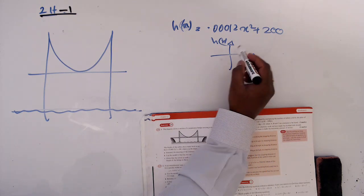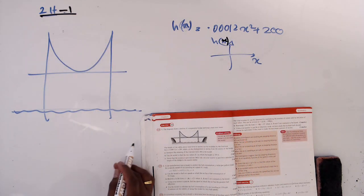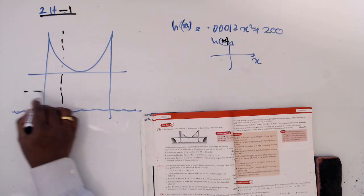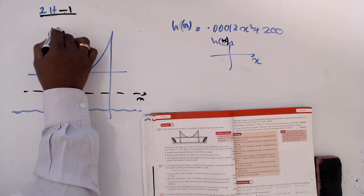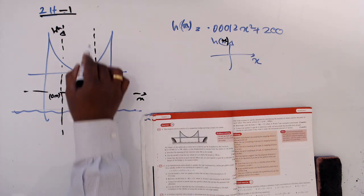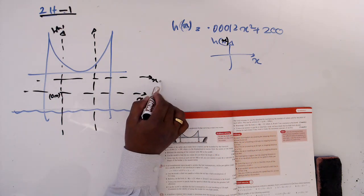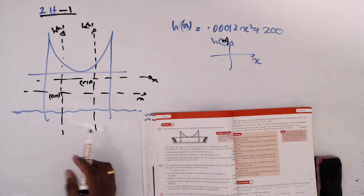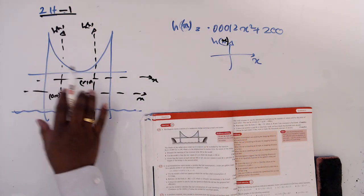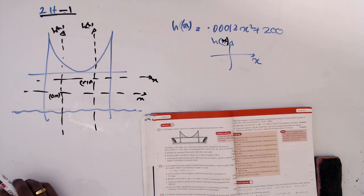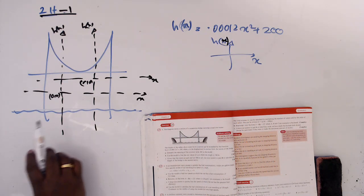Now we want to place the axes. My question is: where do you want to place the x and h(x) axes? You can do one placement like this where (0,0) is here, or you can do another one — there are an infinite number of placements. So we need to place this x-y axis according to the given data. This is the main thing we want to look at.